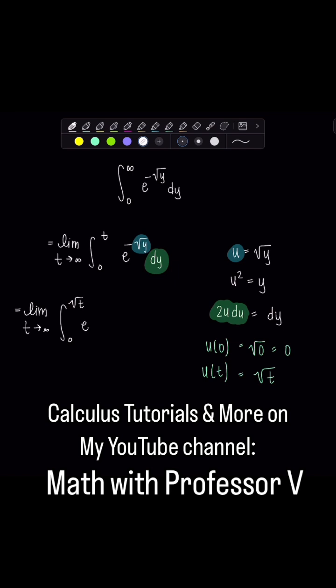Now I have e to the negative u, and then instead of dy, 2udu. How are we doing? Are we okay? All right, good. Now let's look.